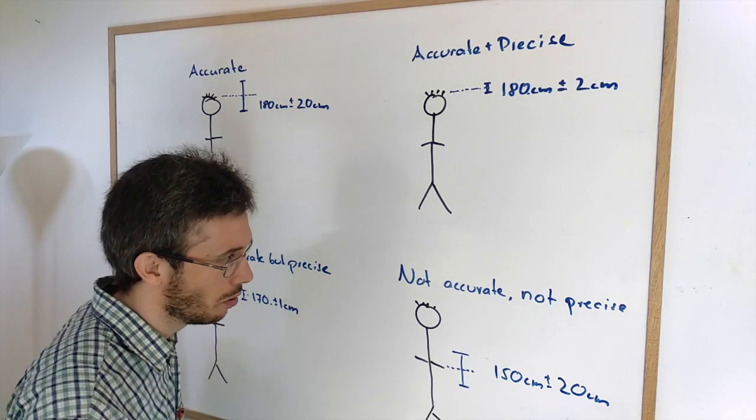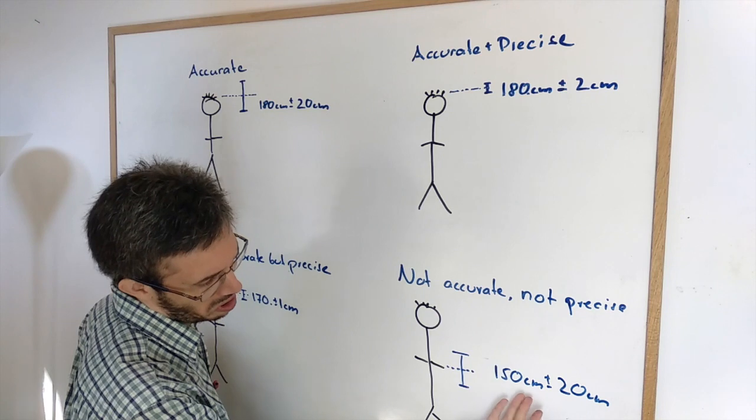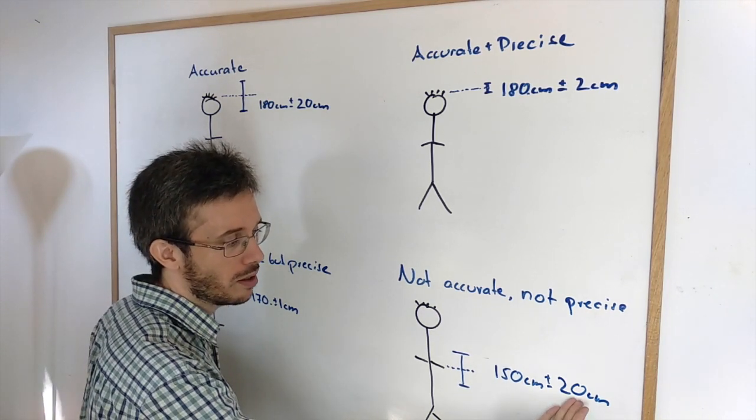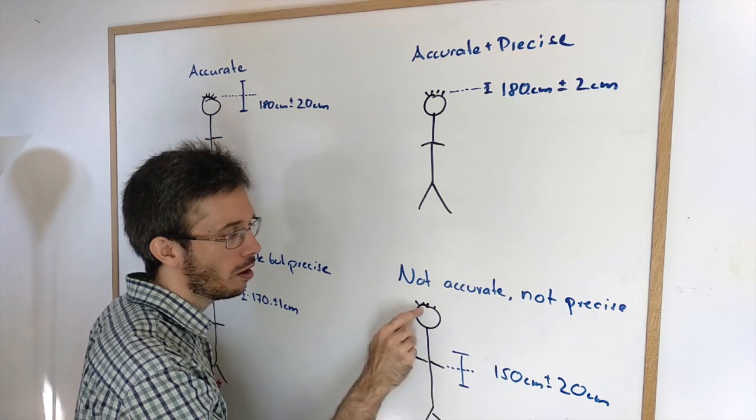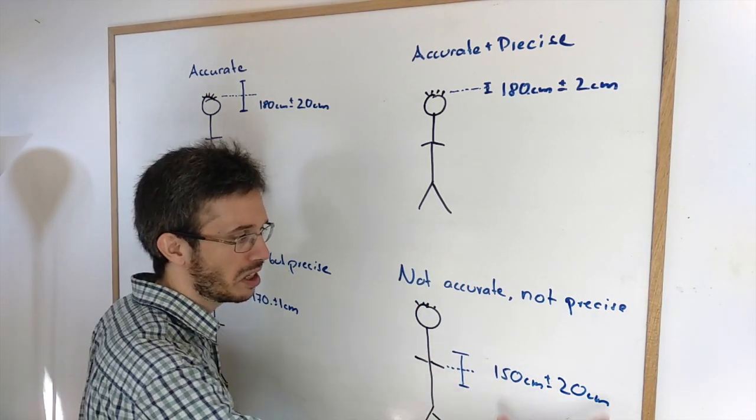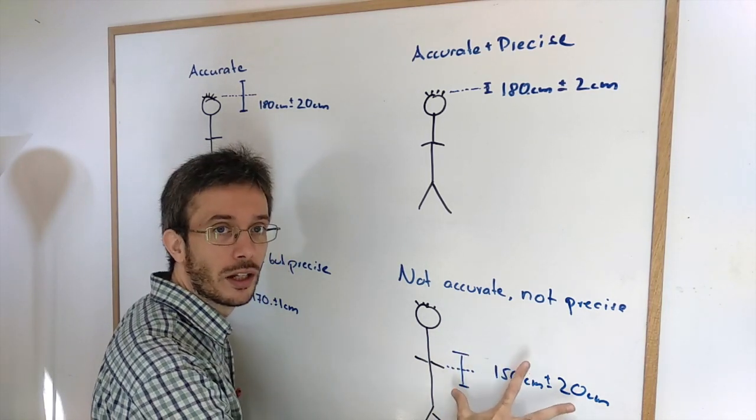Then there is the last possible outcome where you're not accurate and not precise. For example here the person reported a height of 150 centimeters plus minus 20 centimeters. So I'm way off the real height, and on top I have a very low precision. So here this case is kind of the worst case scenario because there's not much I can do.